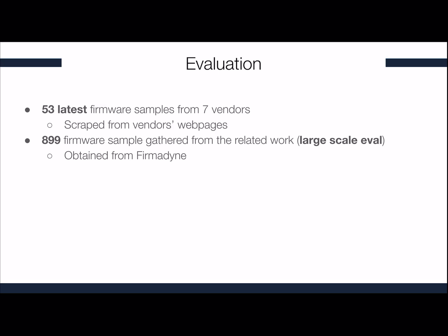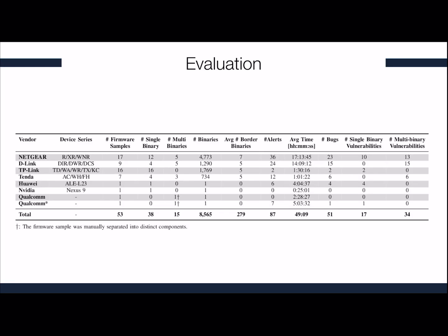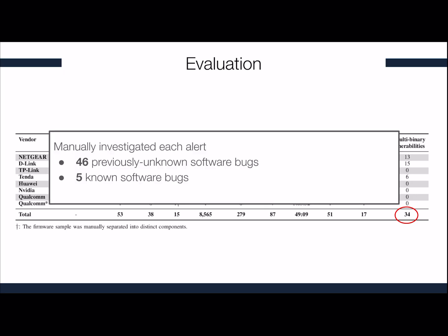We evaluated Caronte using two datasets. The first is composed of 53 latest firmware samples from seven vendors, and the second of 899 firmware samples gathered from related work. Across the 53 firmware samples, we analyzed more than 8000 different binaries and our system produced 87 alerts. Of these, 51 were true positives and indeed bugs. Notably, 34 of these 51 bugs were found because we were propagating user data across different binaries. We found that 46 alerts were previously unknown software bugs and five were already known. We disclosed all of our findings to the vendors.